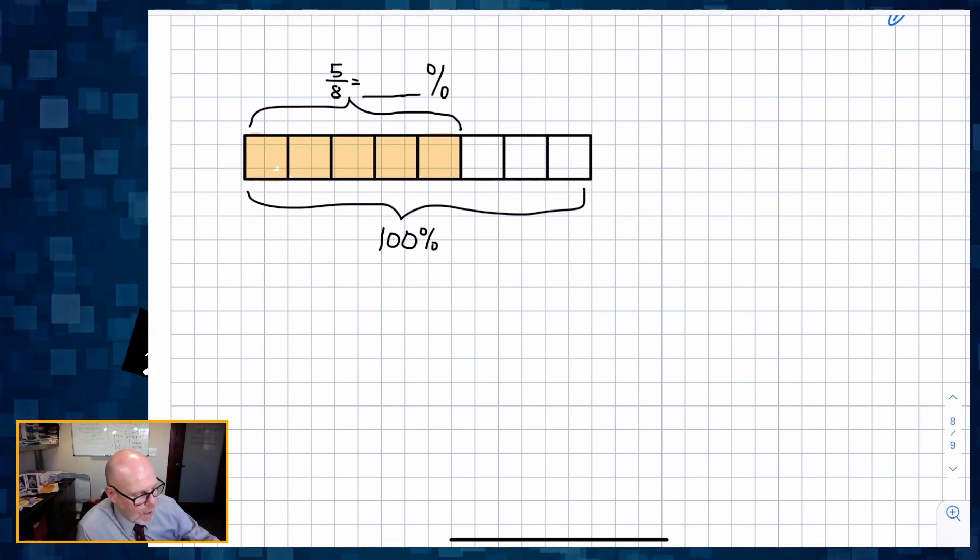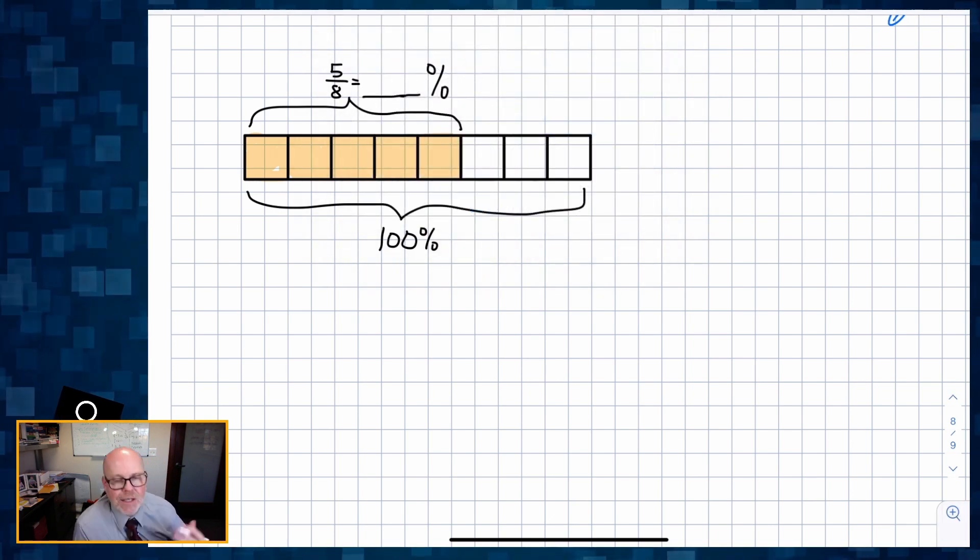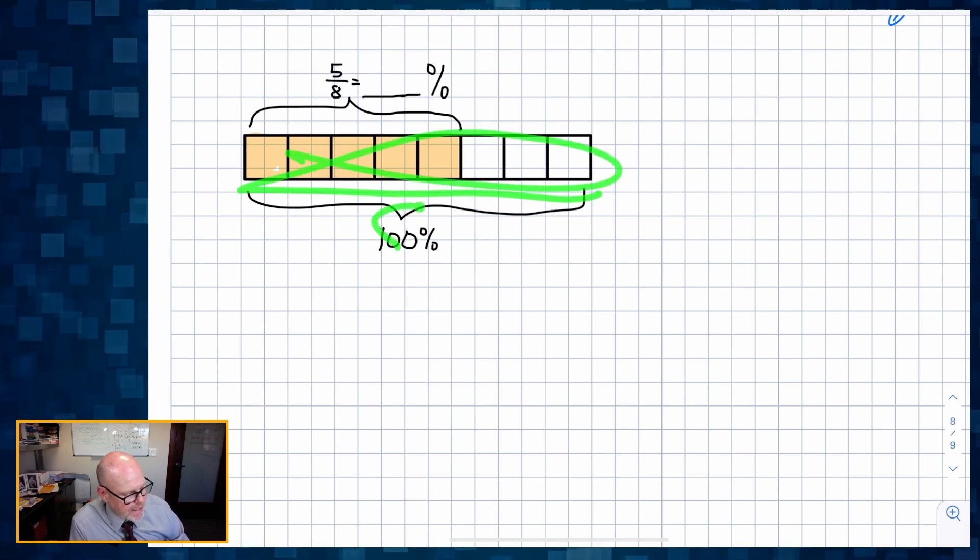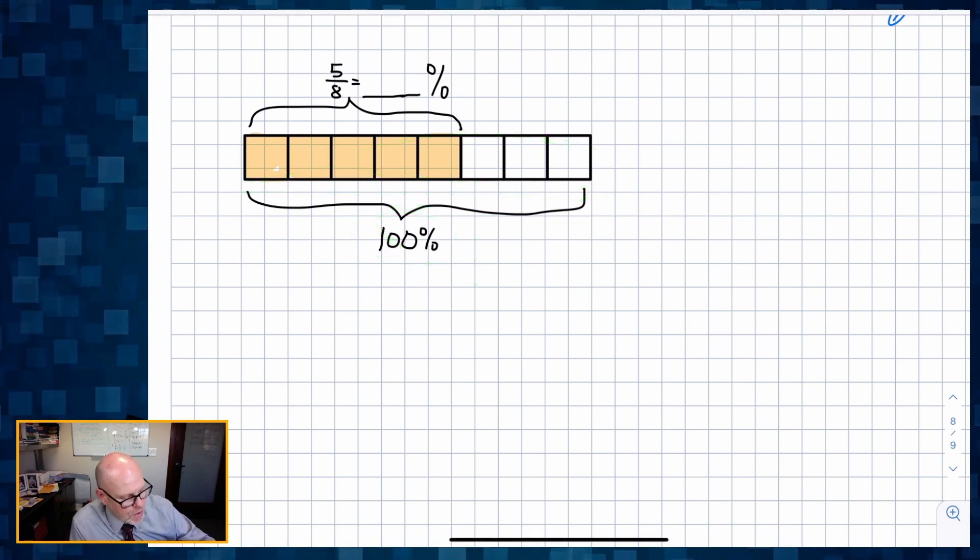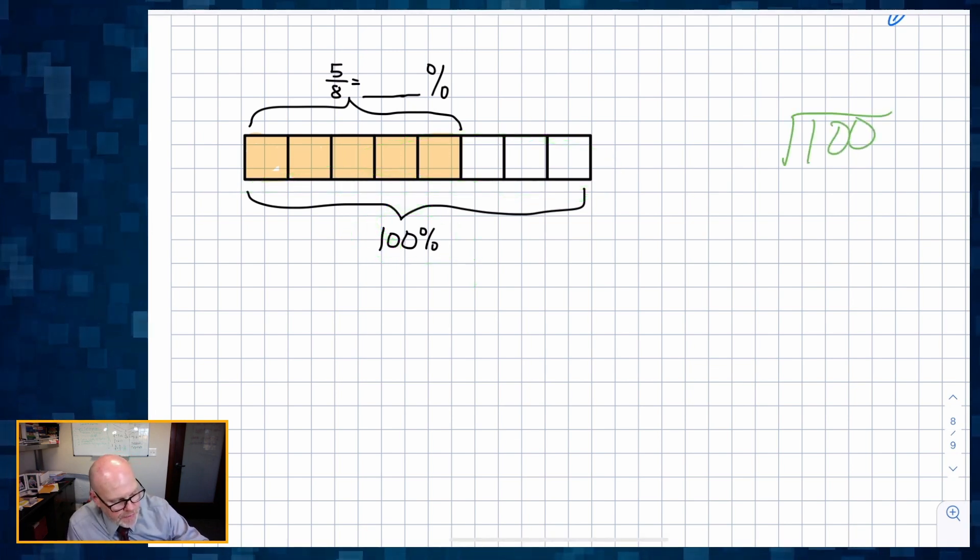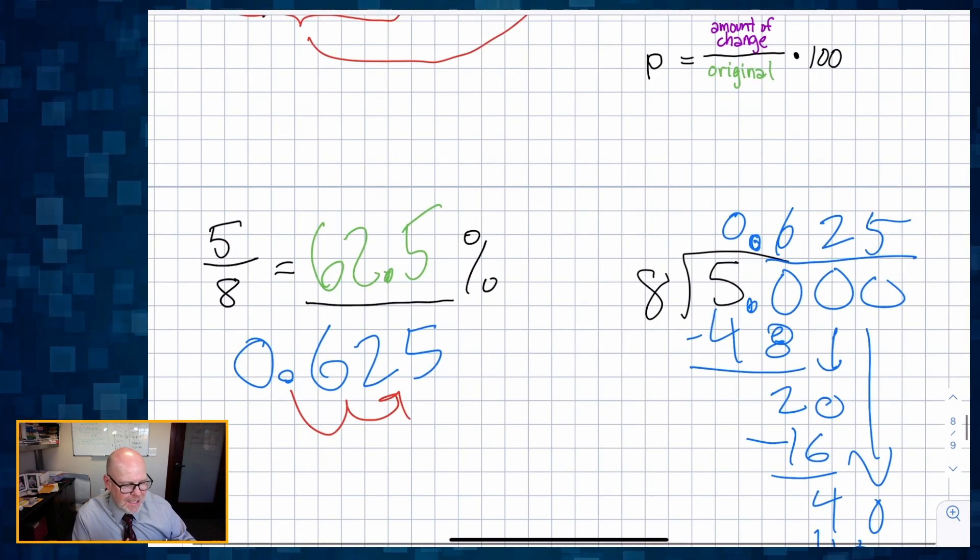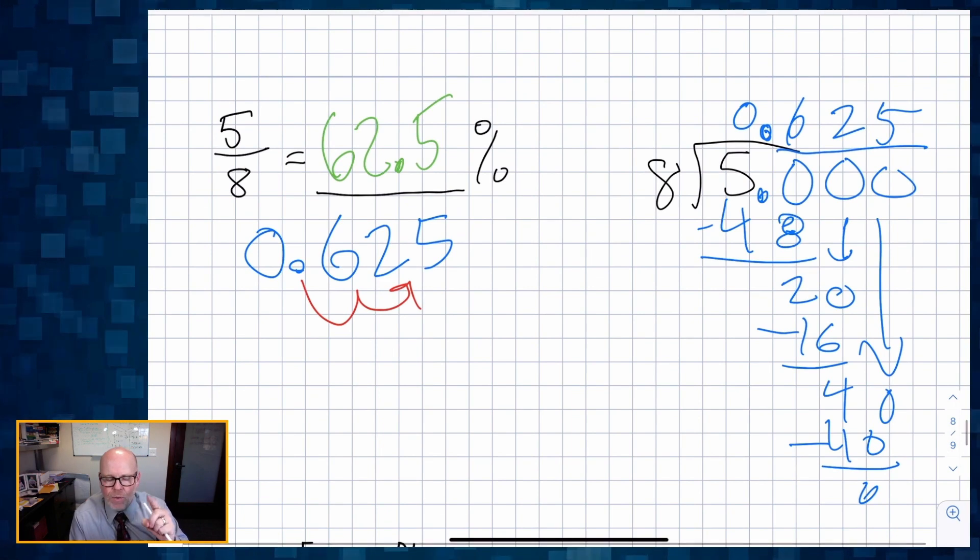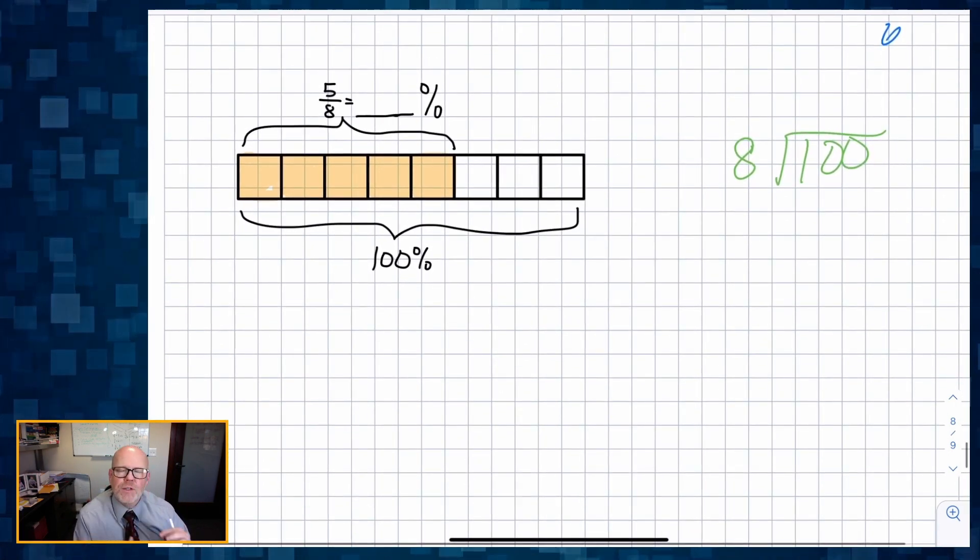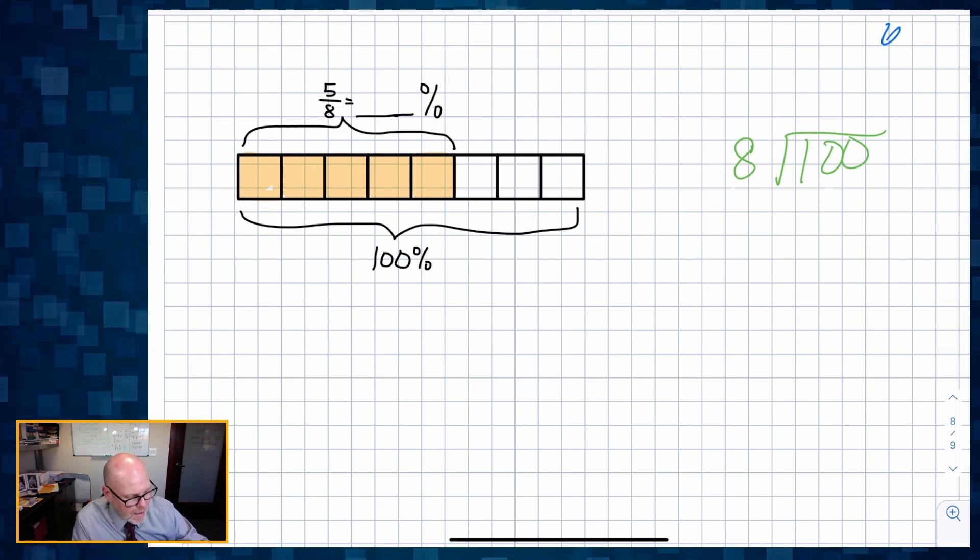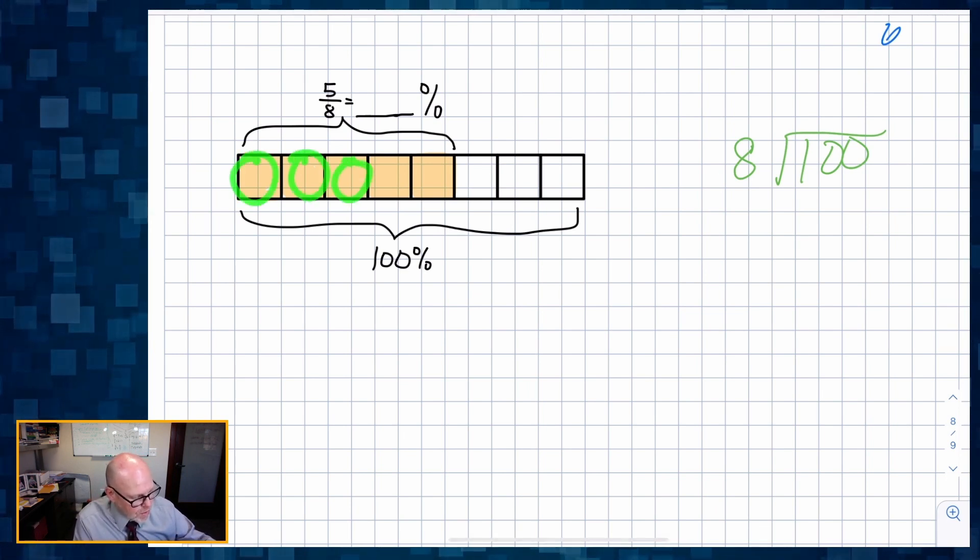Now, what are some things that a student might do? Well, a student might say, well I know that all eight pieces equals 100%. So if I do 100 divided by eight - yeah, they're still dividing like they divided up here. The difference, however, is they know why they're dividing. They're dividing by eight, 100 divided by eight, not five divided by eight, because they want to find the value of each individual piece.